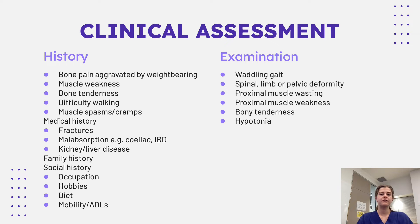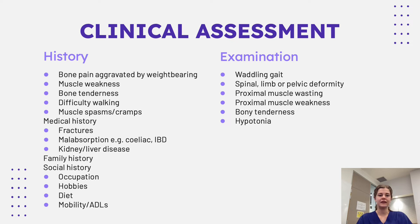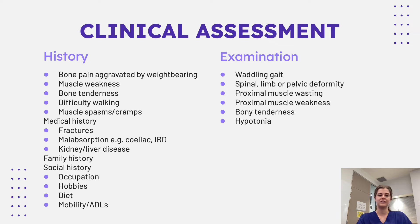When assessing a patient you think could have osteomalacia, key presenting symptoms include bone pain aggravated by weight-bearing, muscle weakness, bone tenderness, difficulty walking, and muscle spasms and cramps — the latter more related to hypocalcemia. In the medical history, ask about past fractures and whether they were fragility fractures, any malabsorptive diseases such as celiac disease or IBD, and any kidney or liver disease. Consider family history of bone, renal, liver, or gut disease. Social history is important — occupation and hobbies largely determine sunlight exposure and therefore vitamin D conversion. Also consider diet, sources of vitamin D, and how symptoms impact mobility and ADLs.